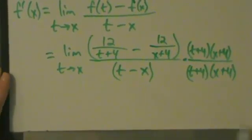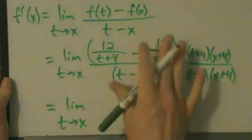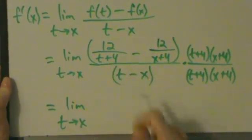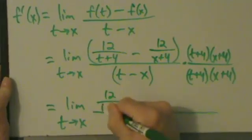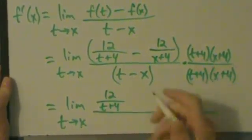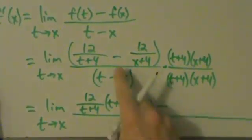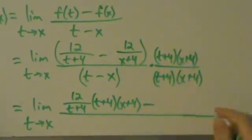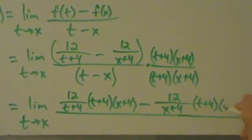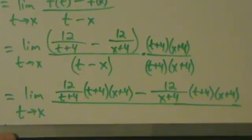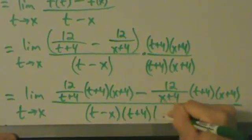Now let's expand that. Nothing really new here — we've done this before when we had h's instead. This is just a little bit simpler because instead of x plus h plus 4, it's t plus 4. We have 12 over t plus 4 times t plus 4 times x plus 4, then minus 12 over x plus 4 times t plus 4 times x plus 4. On the bottom we have t minus x, in parentheses, times t plus 4 times x plus 4.